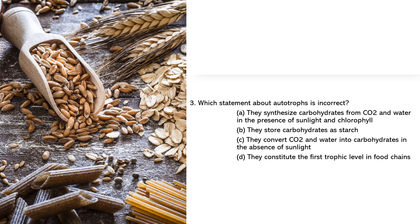Autotropes play a crucial role in ecosystems. They use sunlight and chlorophyll to convert carbon dioxide and water into carbohydrates. Which statement about autotropes is incorrect? Take a moment to consider your answer. Yes, the correct answer for question number three is option C, as autotropes require sunlight for this process.